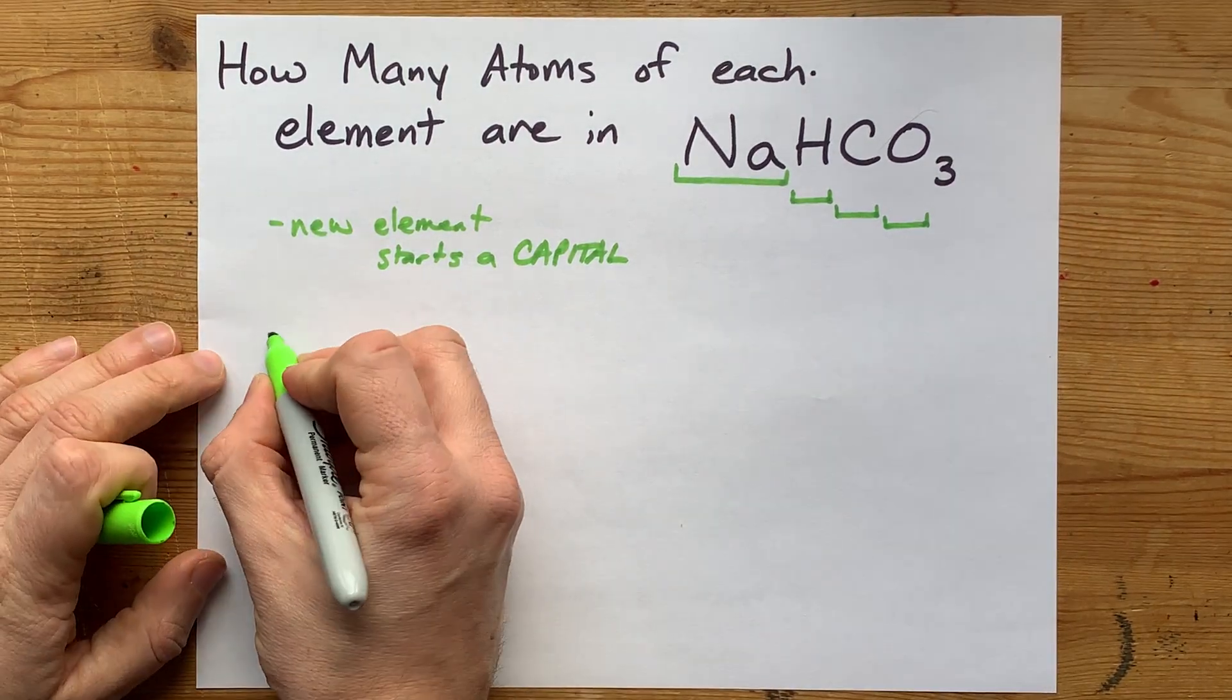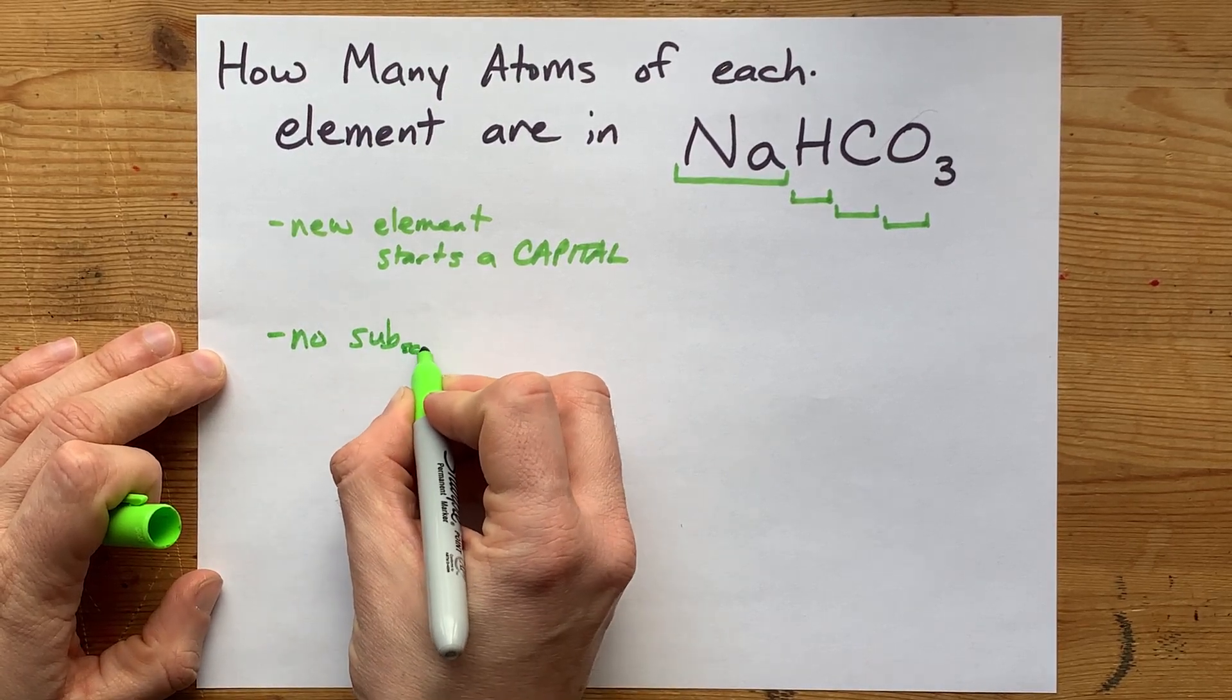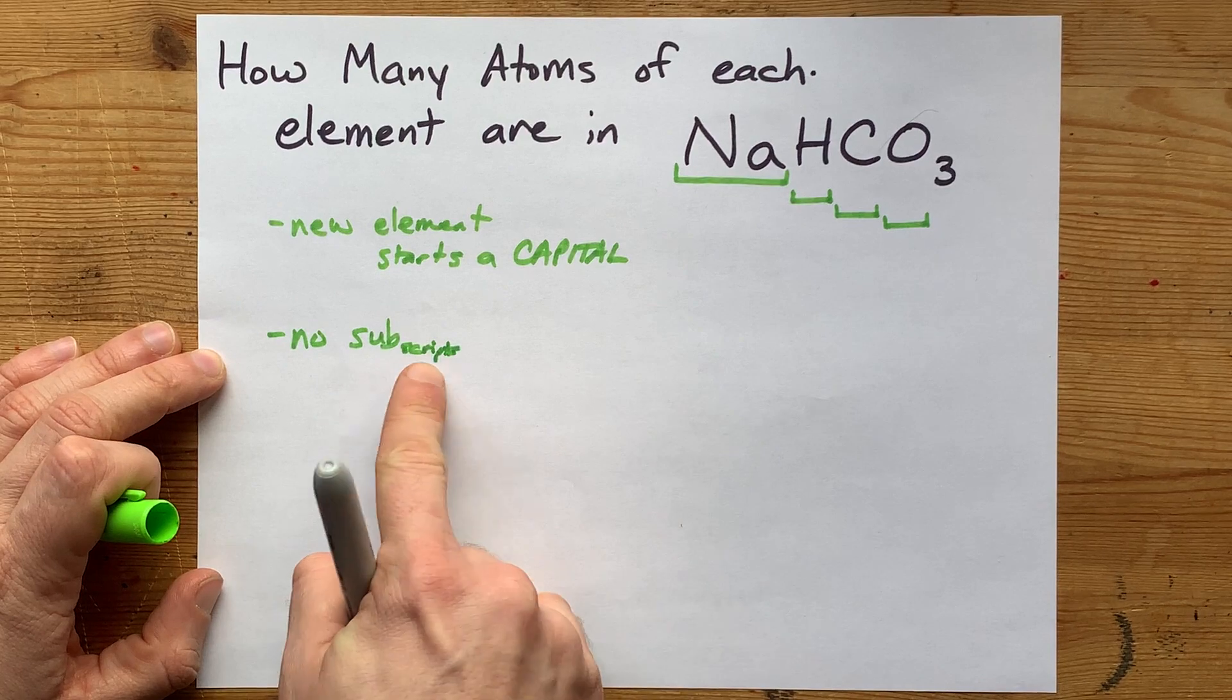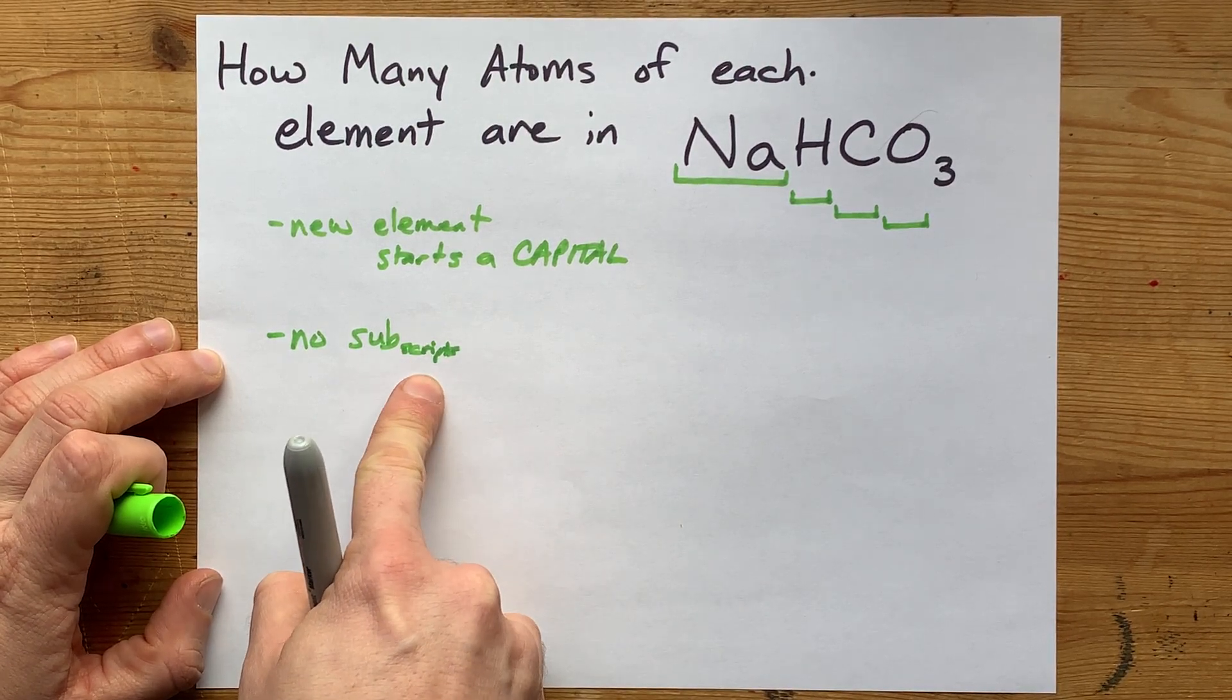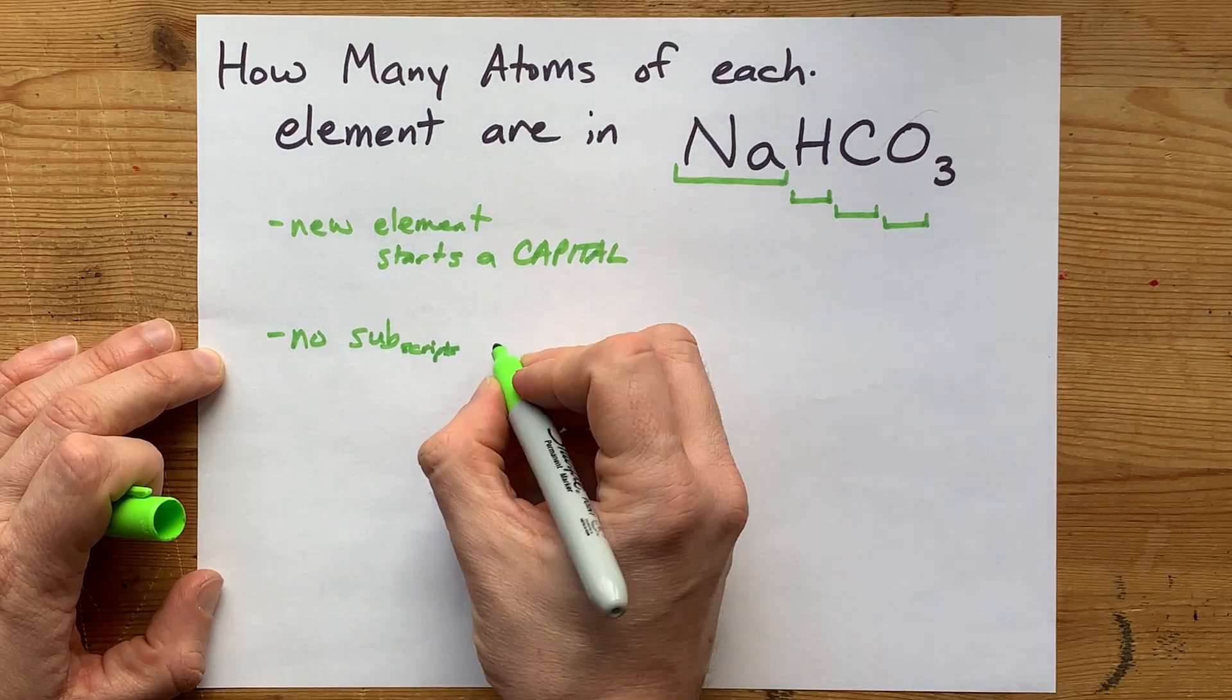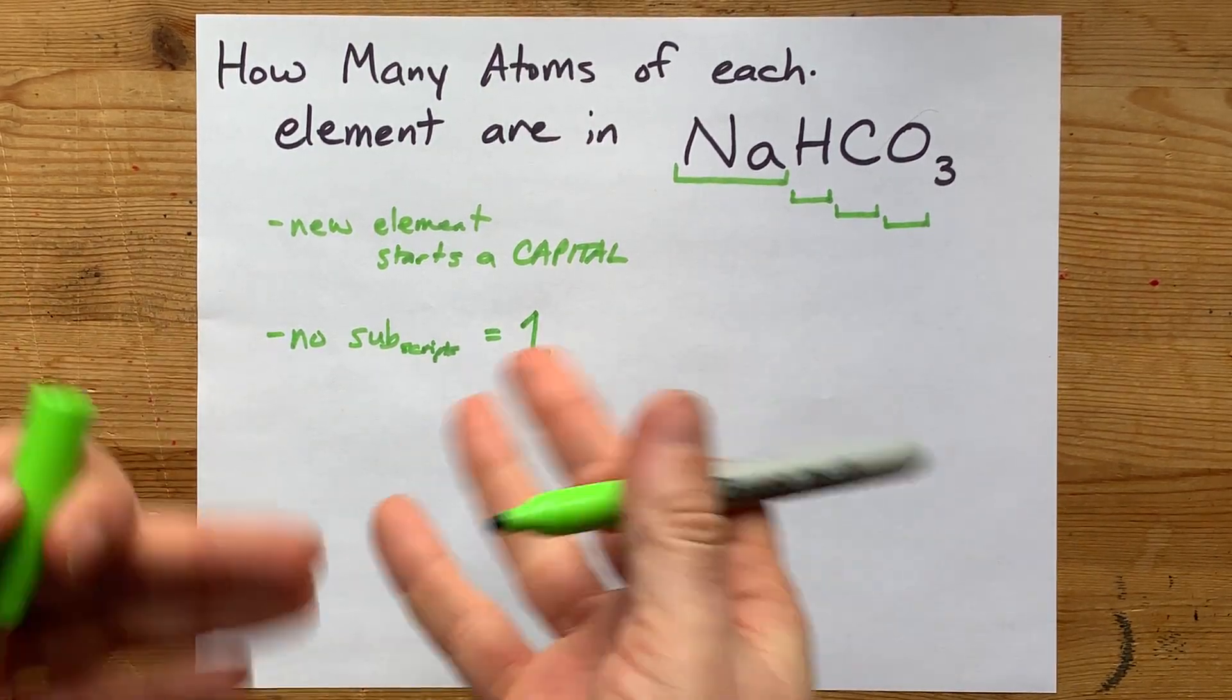Now, the last thing you'll have to know is that if there's no subscript - and the subscripts are the numbers that are written down and smaller to the right of each of these symbols - if there's no subscript written, then it represents a 1.